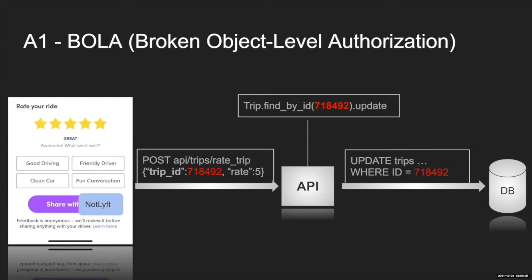Your client would send an API call to /api/trips/rate-trip, but because you've taken many rides the client must mention which ride ID to rate. The developers didn't check whether the ID you're trying to update belongs to a trip you actually took. So as an attacker you could write a script to iterate over all trip IDs and change all ratings to five or zero. This is just one quick example of what you can do with BOLA.